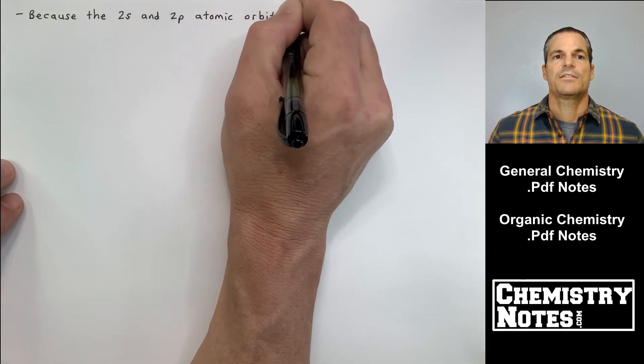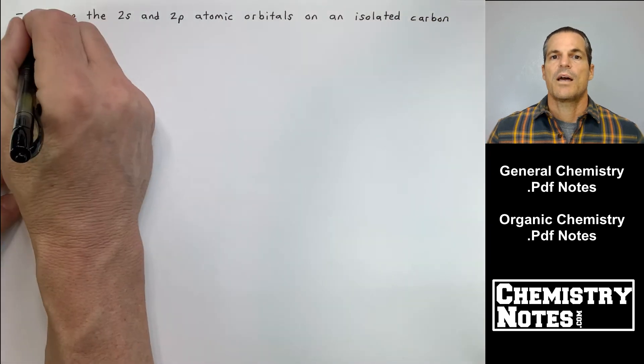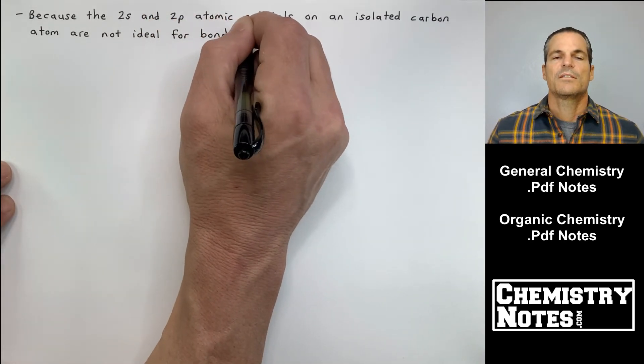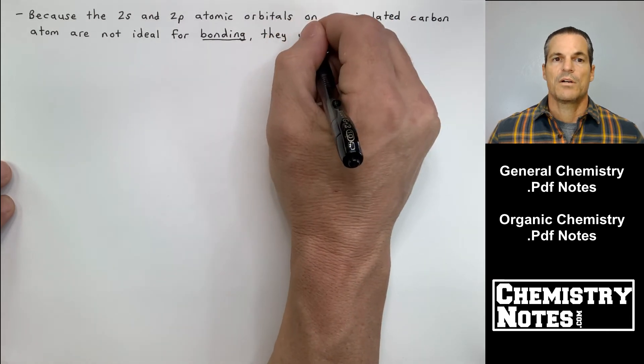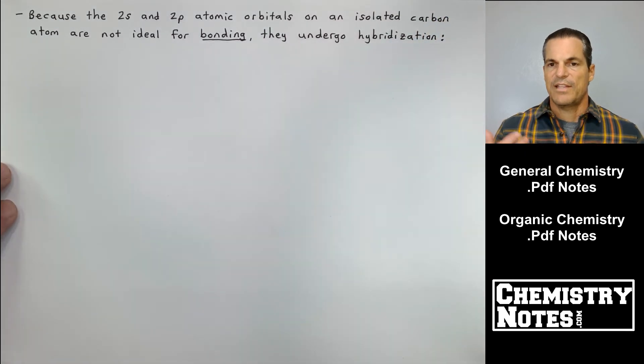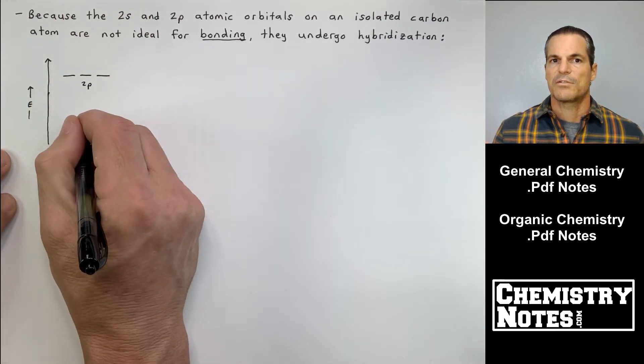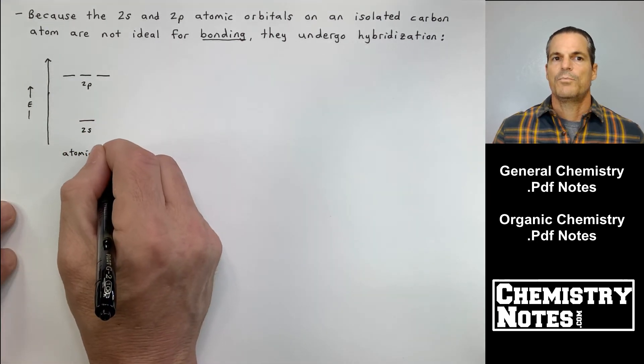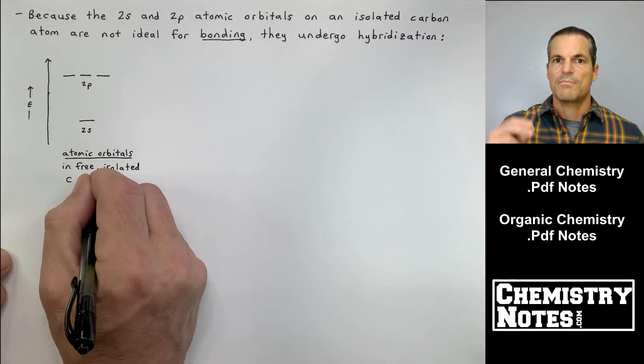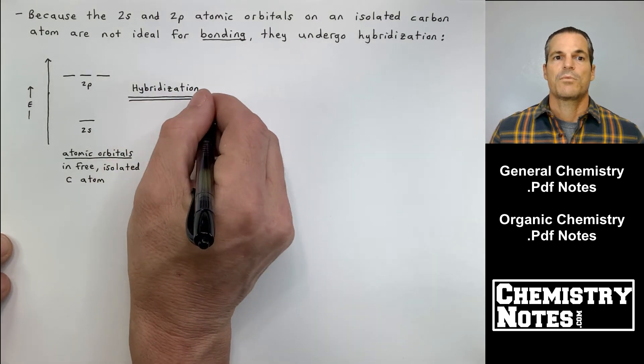At the top of our page it says, because the 2s and 2p atomic orbitals on an isolated carbon atom are not ideal for bonding, they undergo hybridization. By isolated, I mean a freestanding carbon as if it were not involved in bonding. The reason they're not ideal for bonding is you have two s electrons and two p electrons. So you have an s atomic orbital and three 2p atomic orbitals. We need four identical bonding types to make a carbon hydrogen bond, a second, a third, and a fourth carbon hydrogen bond, and we want the bonding in those to be identical. That's why we have to undergo this hybridization.